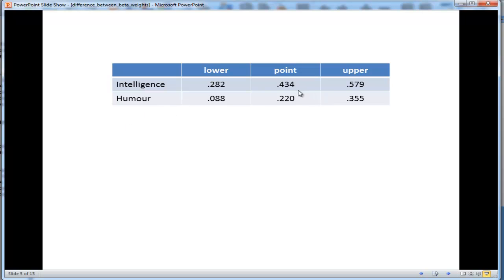I've got the point estimates for the standardized beta weights in the middle column and the upper and lower bound confidence intervals on the right and left sides of the point estimate. I've calculated the difference between 0.340 and 0.282 because I have to calculate the average distance between the lower and the point estimate and the point estimate and the upper for intelligence and humor, respectively. That might not make complete sense to you, but once I show you what these calculations are, it should become clear.